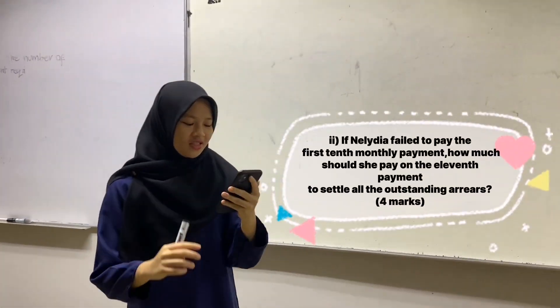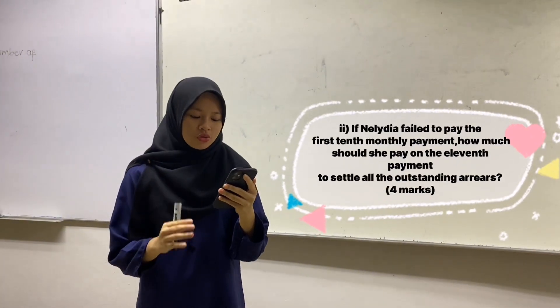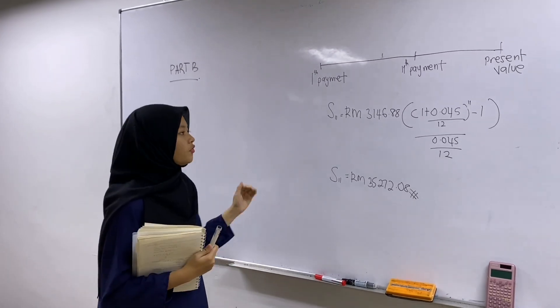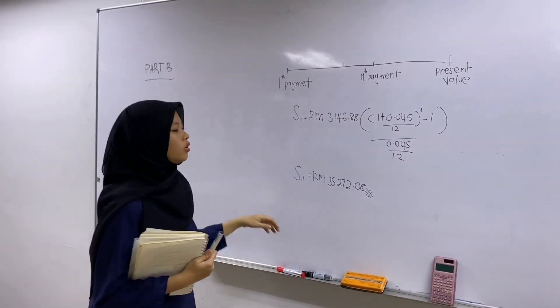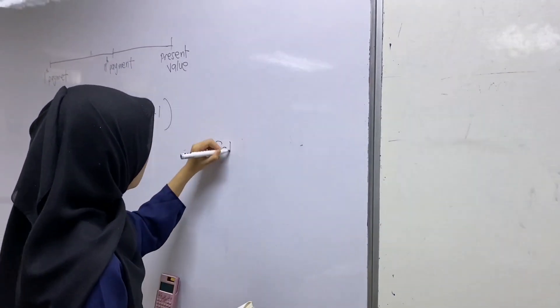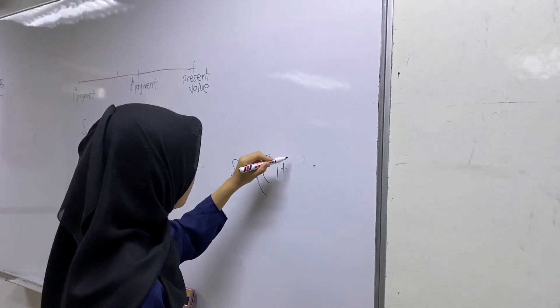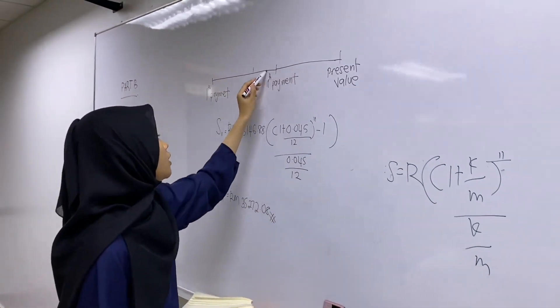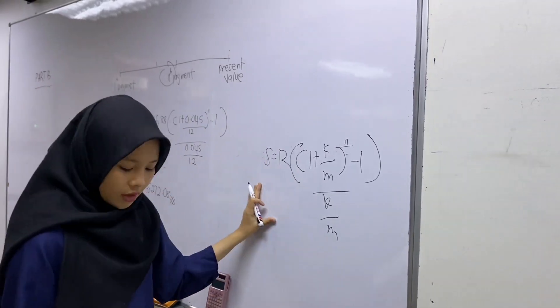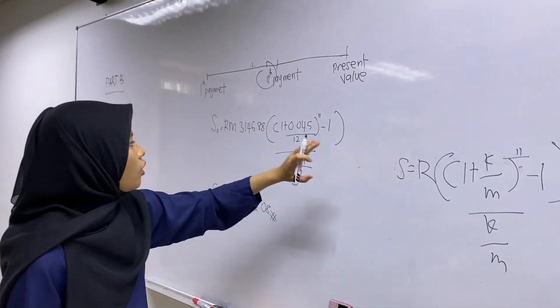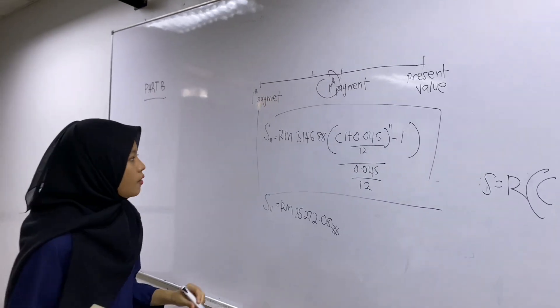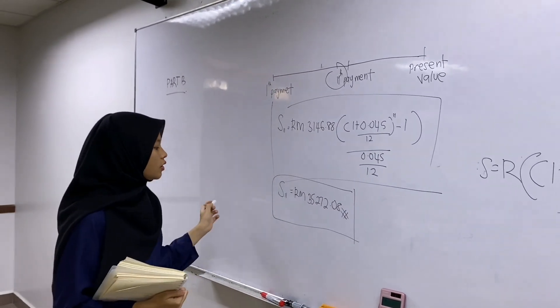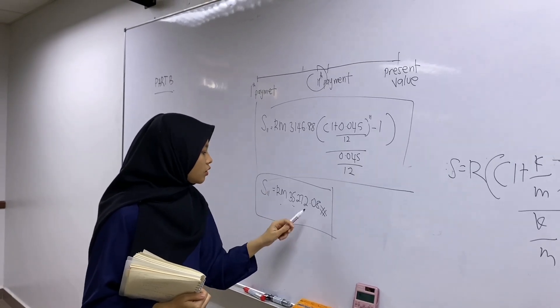Let's go to question 2. If Nelda failed to pay the first 10 monthly payments, how much should she pay on the 11th payment to settle all the outstanding arrears? This is question 2, which is if Nelda failed to pay the 10 monthly payments, how much she would pay in the 11th payment to pay all of the outstanding area. We use the formula which is S equals R times (1 plus K/M)^n minus 1 divided by K/M. We use this because she wants to pay in the 11th payment. This is the formula we use. Just put all of the particulars in this. Just use the formula and you will get the final answer. Nelda paid all of the outstanding arrears: RM35,272.086.